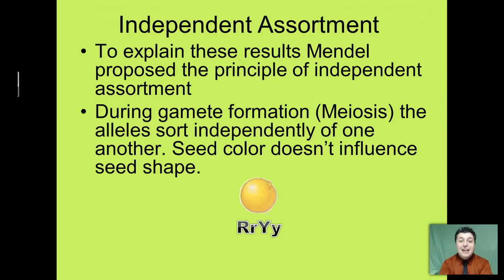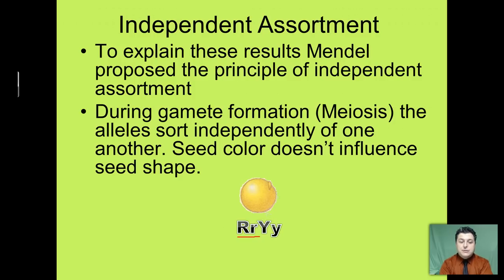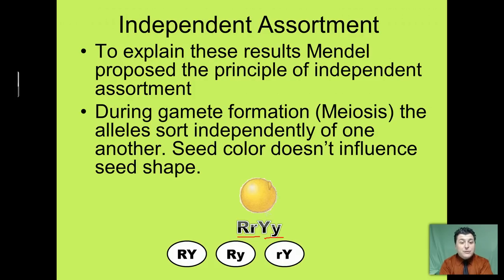To explain these results, Mendel proposed the principle of independent assortment — which in modern language means that when forming gametes (sperm and egg) during meiosis, the alleles sort independently of one another. In other words, seed color is not going to influence seed shape. So our F1 hybrids, which contain both round and wrinkled alleles as well as yellow and green alleles, could pass on: the round allele with the yellow allele, the round allele with the green allele, the wrinkled allele with the yellow allele, or wrinkled with green. Seed color is not influencing seed shape — in the same way that eye color doesn't necessarily have to go with a person's height.